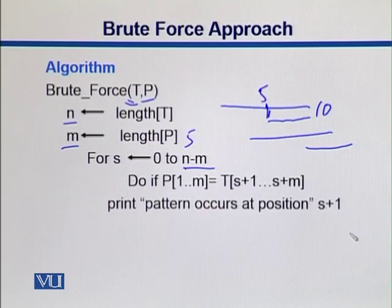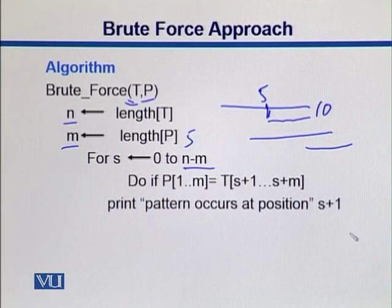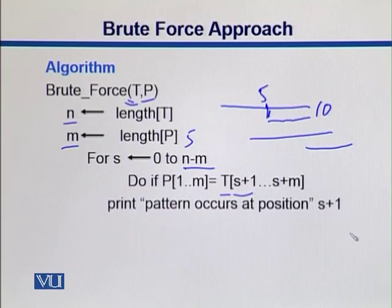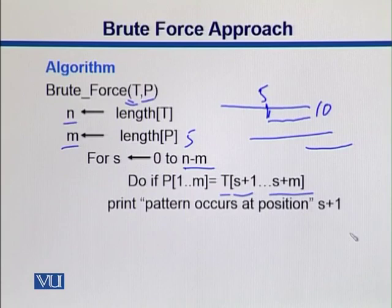We check if P[1 through M] equals T[S+1 through S+M]. We start with nucleotide number 1 of the pattern and go up to its full length. Since the loop starts at 0, we add 1 here — so it is 0+1, meaning the first nucleotide is compared, up till the last nucleotide of the pattern. If we find an occurrence, we report that the pattern occurs at position S plus 1.